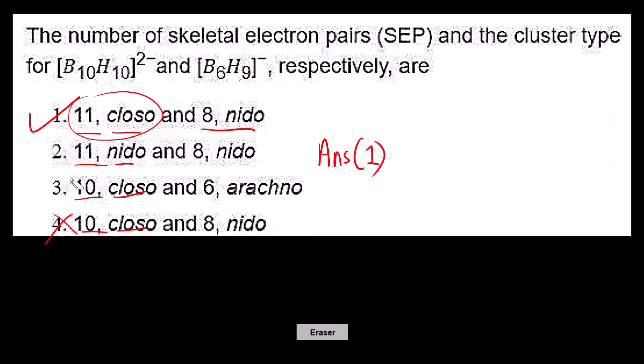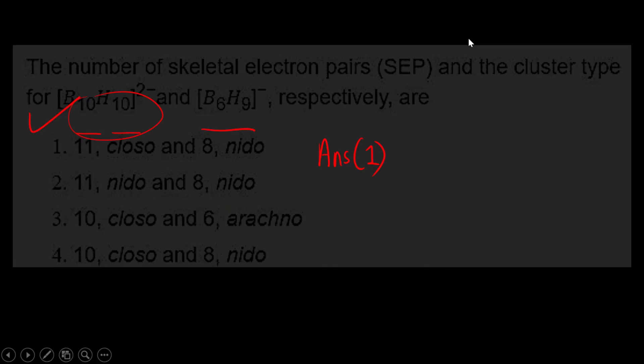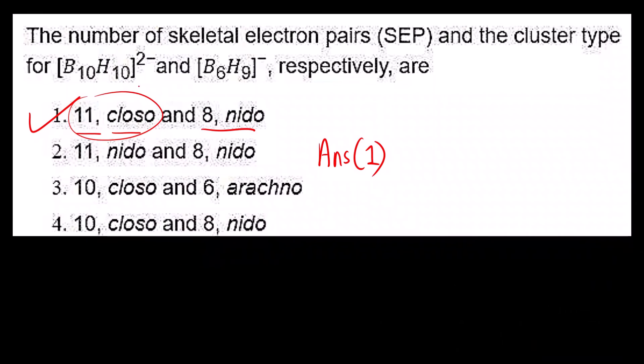In this way you can calculate. If metal clusters is given then you have to follow this table. For transition metal clusters you will follow this table. I hope you have understood how to calculate skeletal electron pairs. It is very important and every year they are asking this question, either boranes or metal clusters. Thank you.